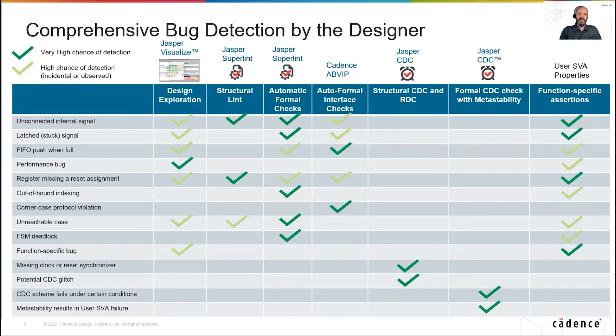These methods are all relying on Jasper Gold formal property verification, Superlint, and CDC apps, as well as optional Cadence ABVIP for interface checks. The takeaway here is that formal provides a comprehensive and efficient way for designers to create the highest quality RTL. Formal can provide a designer with robust unit-level analysis, catching bugs as early as possible to reduce development costs.